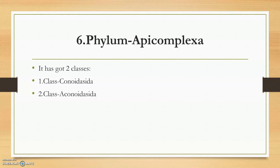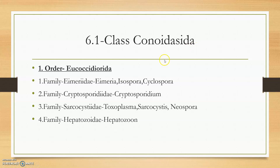Moving to the largest phylum in protozoa — phylum Apicomplexa — which is very important for exams and field purposes. It has two classes: Conoidasida and Aconoidasida. Under class Conoidasida, the order is Eucoccidiorida, with four families of interest: Eimeriidae (genera: Eimeria, Isospora, Cyclospora), Cryptosporidiidae (genus: Cryptosporidium), Sarcocystidae (genera: Toxoplasma, Sarcocystis, Neospora caninum), and Hepatozoidae (genus: Hepatozoon).